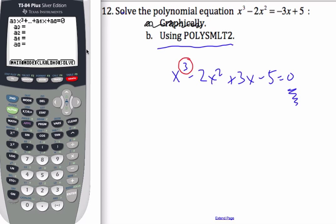Now I just enter my coefficients. I have a 1 for the first one, a negative 2, a 3, and a negative 5. Hit enter on the last one, and then hit solve, which is the graph button.